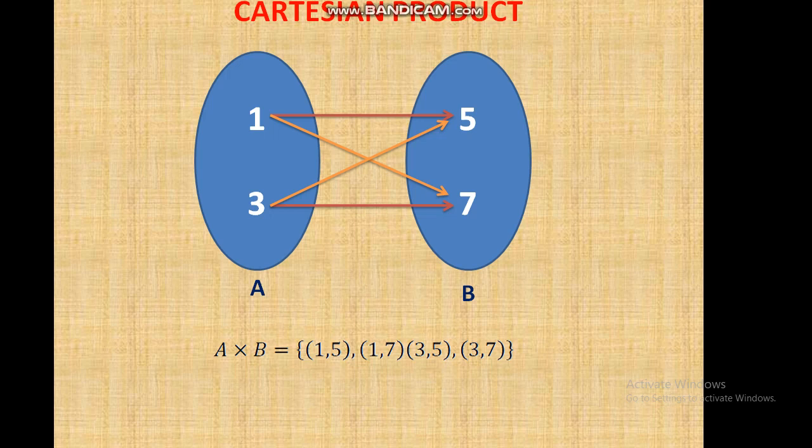It is clearly to be noted that B × A is {(5,1), (5,3), (7,1), (7,3)}. According to this concept of cross product or Cartesian product, we conclude that A × B is not equal to B × A. Therefore, the cross operation is not commutative. Thank you.